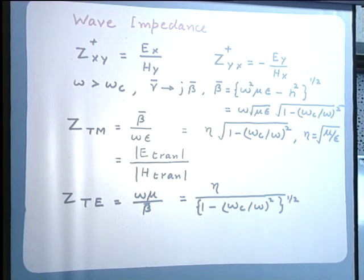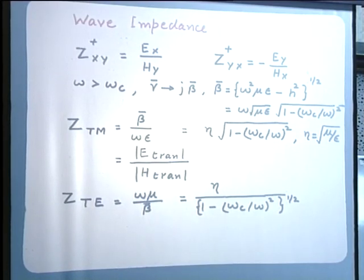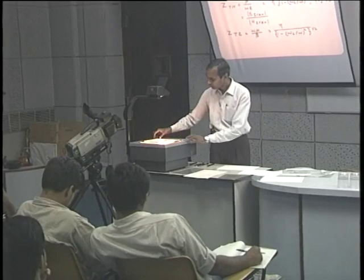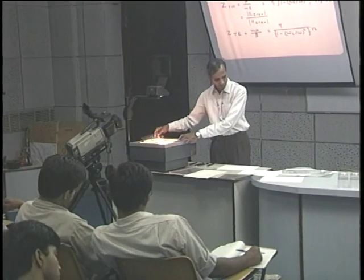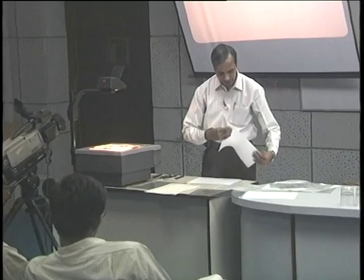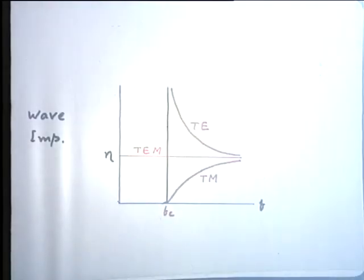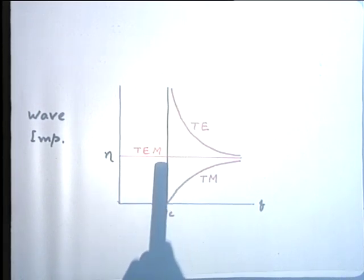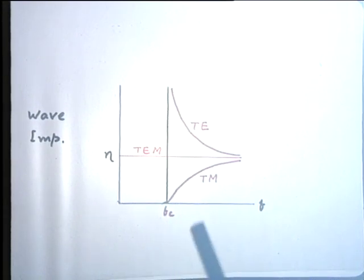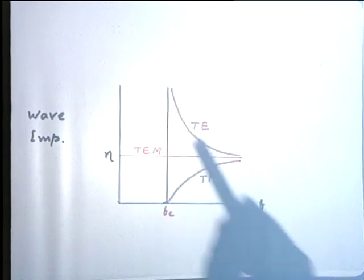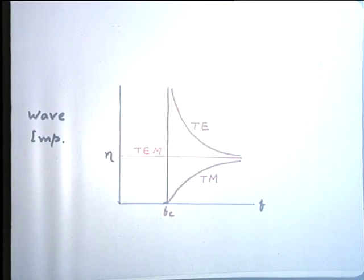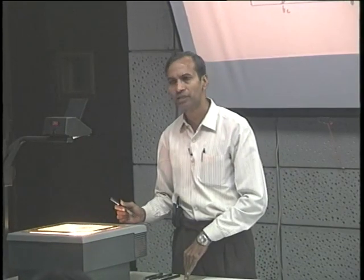As far as the expression in terms of frequency and cutoff frequency is concerned, these expressions are quite general. Therefore the variation of the wave impedance as a function of frequency that we considered for the parallel plane guide is maintained here also. The only difference is that for the rectangular waveguide there is no TEM mode that can propagate. The variation of the wave impedance for TM and TE modes remains qualitatively the same in terms of the cutoff frequency.